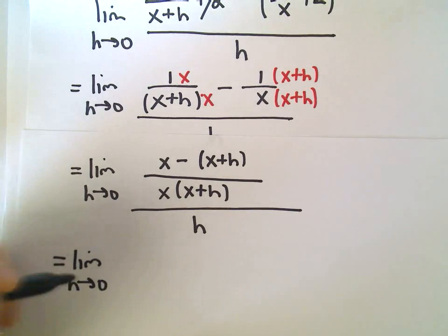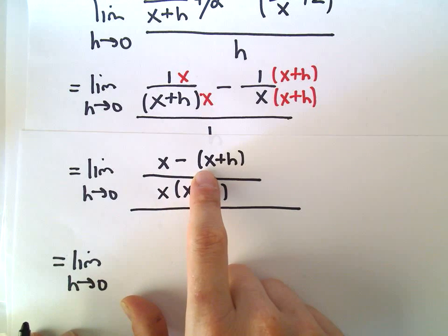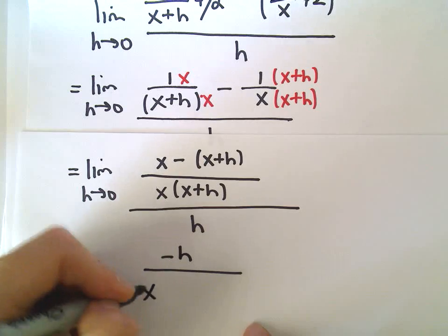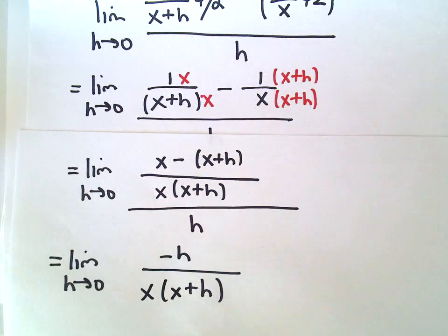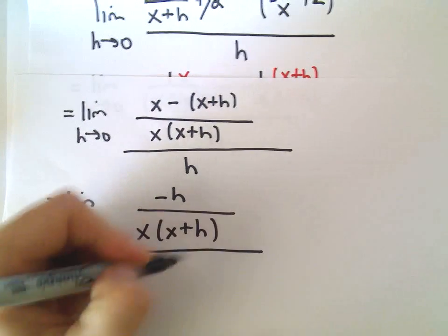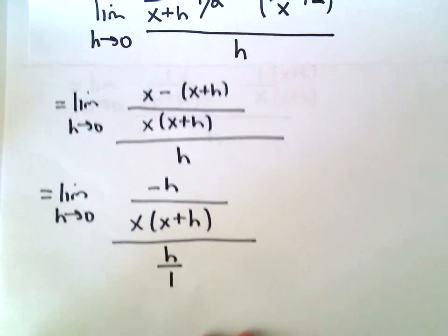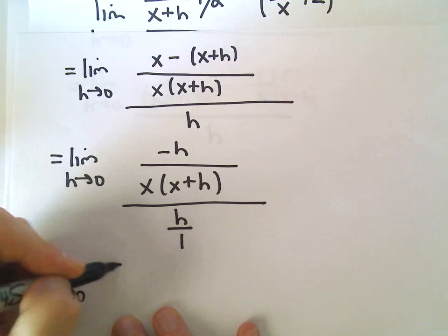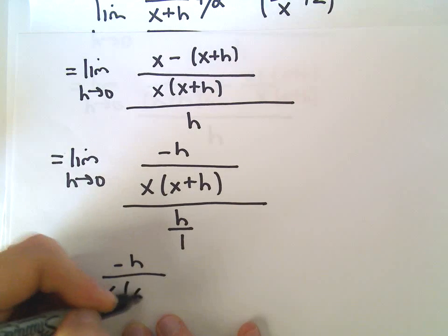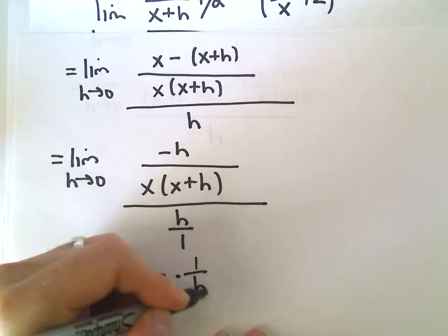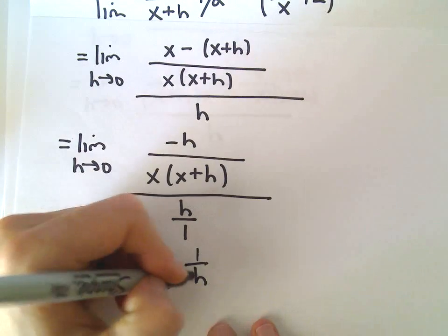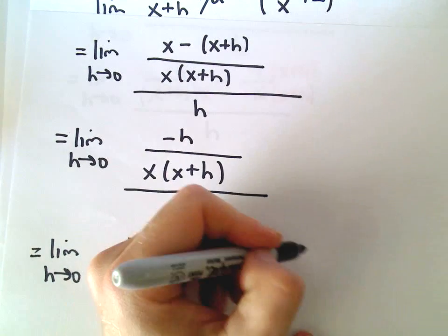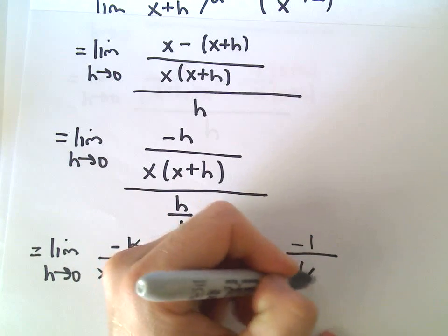Now it's just a matter of simplifying the numerator. We'll have the limit as h approaches 0, with x minus the quantity x plus h in the top, our common denominator of x times x plus h, all divided by h. In the numerator, x minus x gives us 0, leaving negative h over x times x plus h. We can rewrite this as negative h over x times x plus h, multiplied by 1 over h, and simply cancel out the h's.